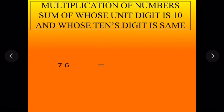Suppose we want to multiply 76 and 74. Here unit digits are 6 and 4. Sum of 6 and 4 is 10. Also tens digits are same here. So we will follow same method to multiply these type of numbers.